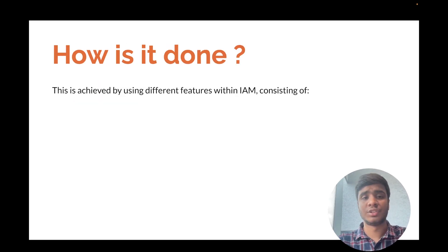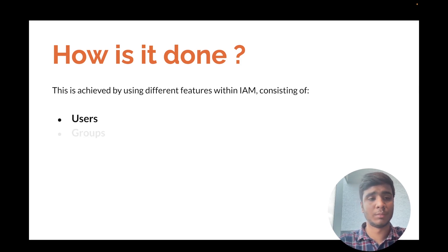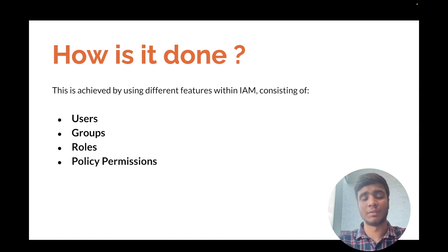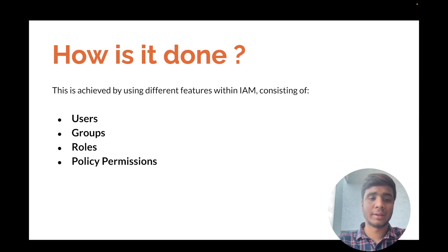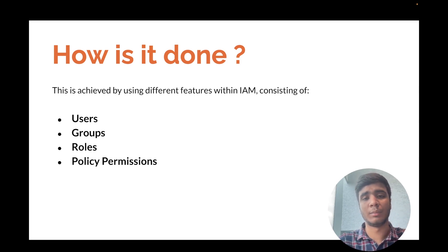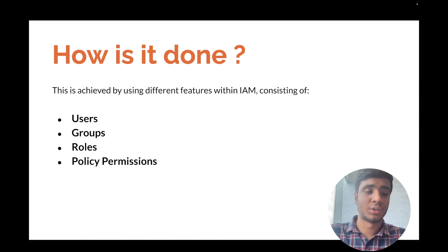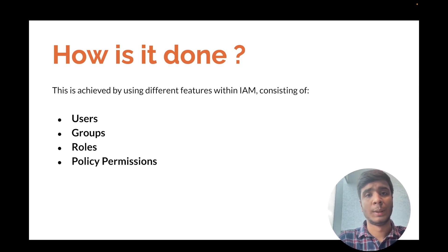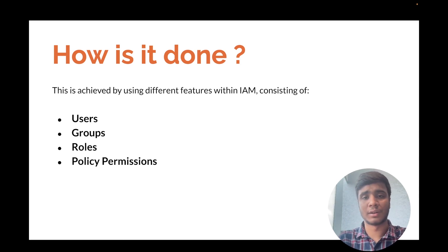How is this achieved? It is achieved with the help of multiple features that IAM has: users, groups, roles, policies, and many more. These are the features we use in IAM to manage identity and access. I want to emphasize the word 'identity' because identity is anything that is used to get into a resource. Identities can be users, groups, roles, etc. We'll get more into what exactly identities are later in the video.